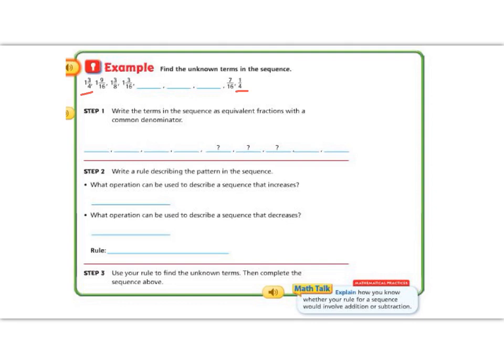So if I have 1 3/4, let's make them all into 16ths because 4 can go into 16, and 8 can go into 16, and the 16ths are already in 16ths, so we won't have to change those. So if I'm trying to change 3/4 into 16ths, 1 3/4 changing into 16ths means that I need to multiply by 4 on the top and the bottom.